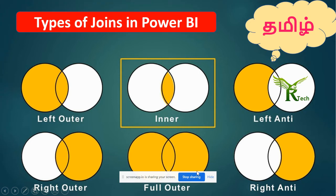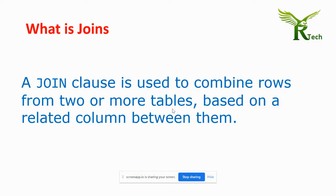Hi everyone, welcome to our tech YouTube video channel. Now we are going to talk about types of joins in Power BI, Tableau, and SQL. Joins are common for all platforms. A join is used to combine rows from two or more tables based on a related column between them.